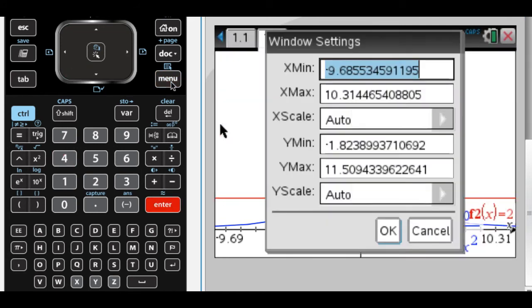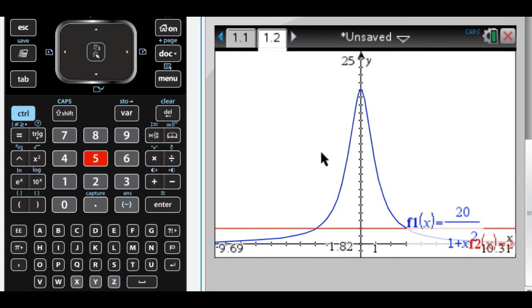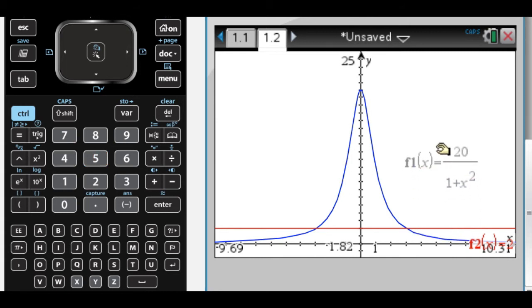Window settings. Go up to 25. Alright, so the region is bounded above by this graph, by F1, and below by F2.